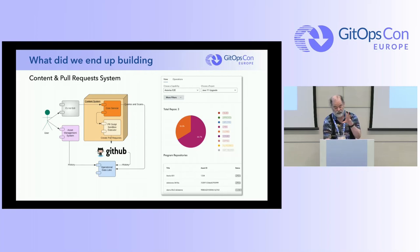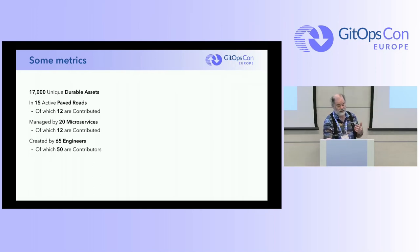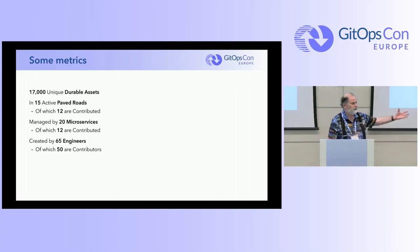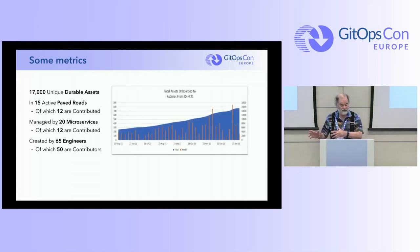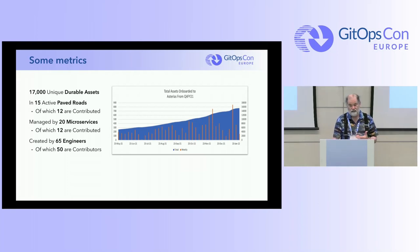This is the UI used to see people accepting PRs, nudge them when needed, and view metrics about what happens. Currently we have in excess of 17,000 durable assets managed through this system, and it grows regularly. We have 15 active paved roads, of which 12 were built through internal company contributions — we had nothing to do with them. We're managing 25 microservices, with 12 contributed externally. 65 engineers internally contributed, while we only ever had 15 engineers working on our team over three years.